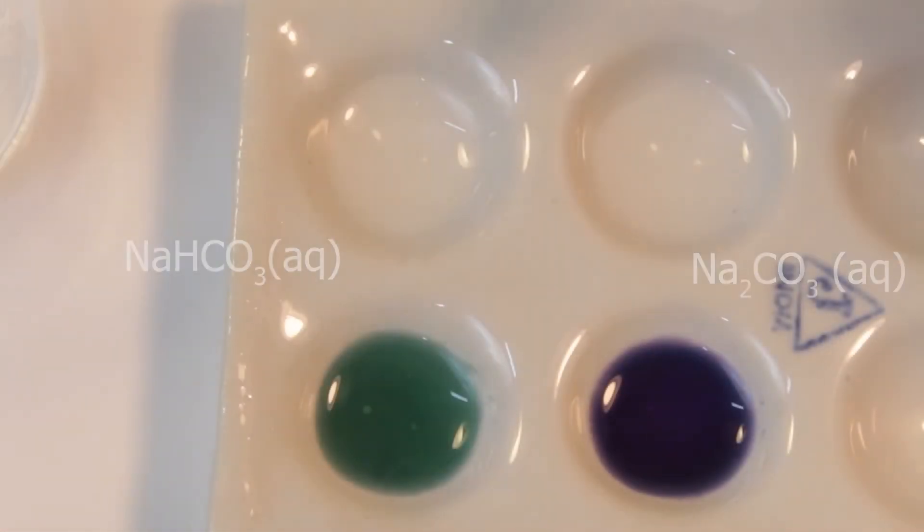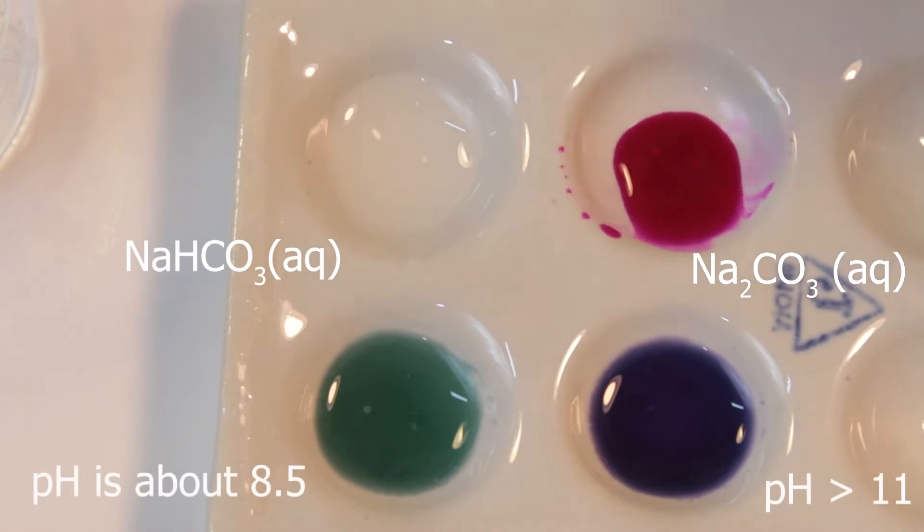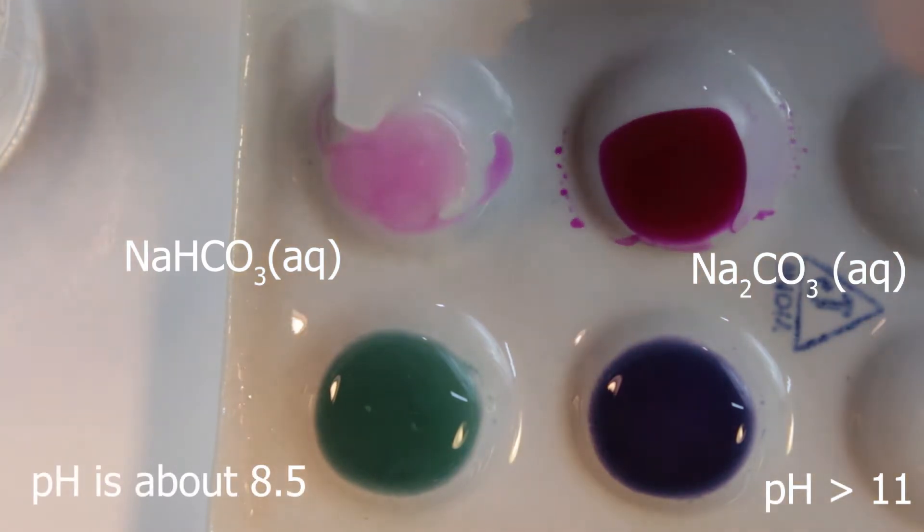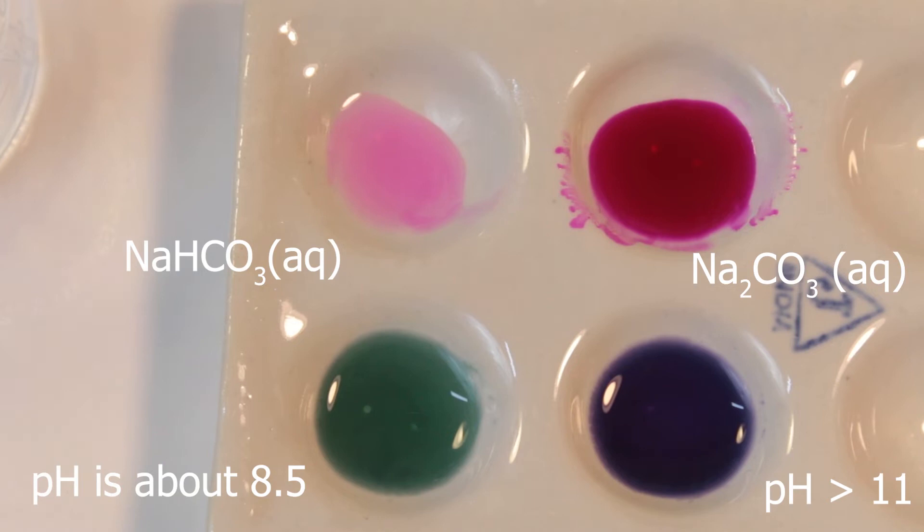Test with phenolphthalein is important for one of the tests which follows later. Hydrogen carbonate, it's pink. In carbonate, though, it's red-violet.